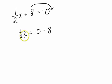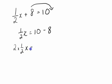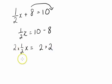It would be easier to take away the half by multiplying both the left-hand side and the right-hand side by 2. So 2 times one-half x gives us x, and 10 minus 8 is 2, multiplied by 2 gives us 4. So x equals to 4.